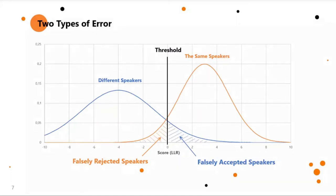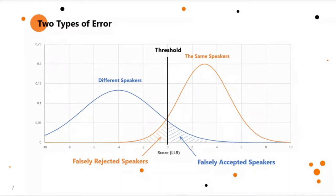One error is where speakers are falsely accepted — the system says it's the same speaker, but in reality it's not. Security teams don't like to see this error because it means someone else can access your account. The other kind of error is when there are two recordings from the same speaker, but the system says it's a different speaker. This error is less dangerous than the first, but it makes the system less convenient for users, so the user experience group will complain and want this error as small as possible.